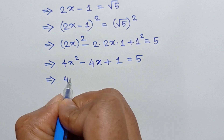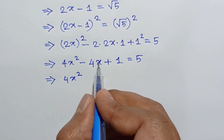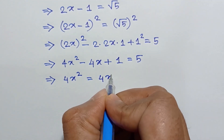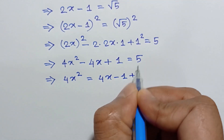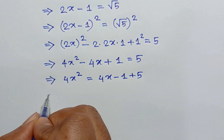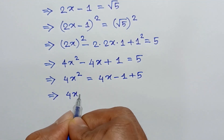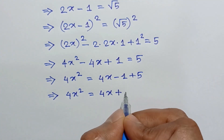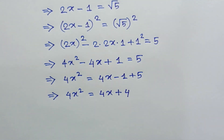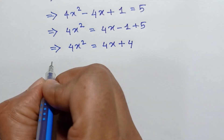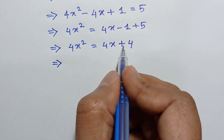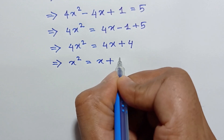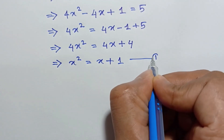Taking −4x + 1 to the right side, we will have 4x² = 4x + 5 − 1 = 4x + 4. Dividing both sides by 4, we get x² = x + 1. Call this equation number 1.